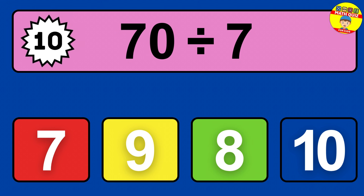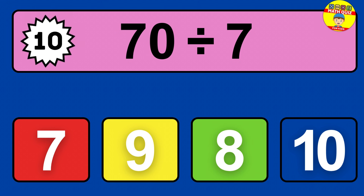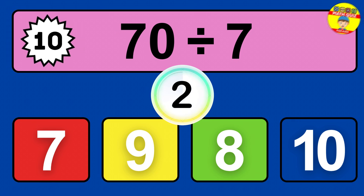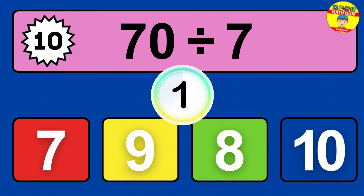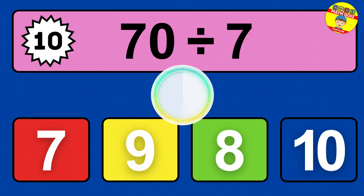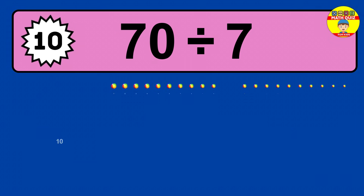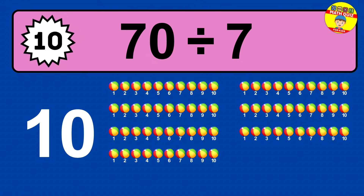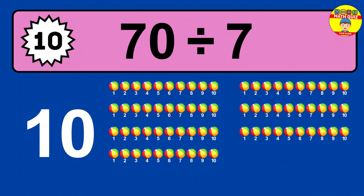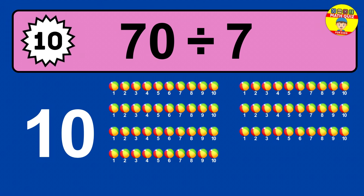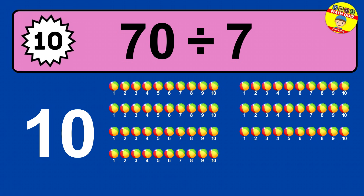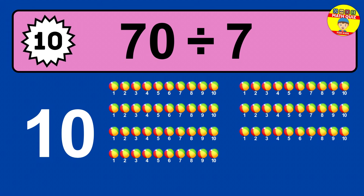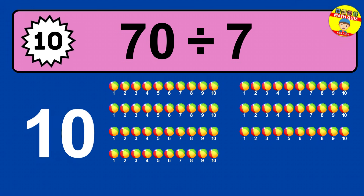70 divided by 7 — time to think. Let's go to the solution. Divide the number 70 by 7. Each group contains 7 units, so dividing 70 by 7 results in 10 equal groups. Thus, the result is 70 divided by 7 equals 10.